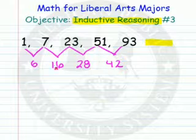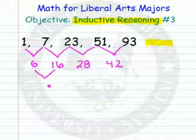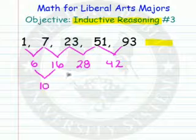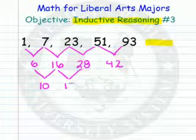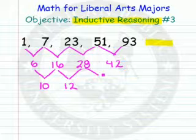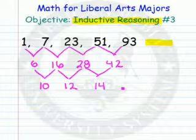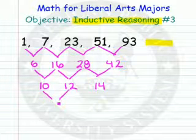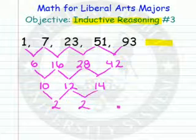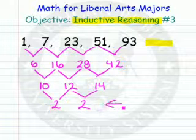Let's just do that subtraction again. 6 and 16, the difference is 10. 16 and 28, the difference is 12. 28 and 42, the difference is 14. I do see something here, they seem to be changing by 2. What happens we subtract again? 10 and 12, the difference is 2. 12 and 14, the difference is 2.